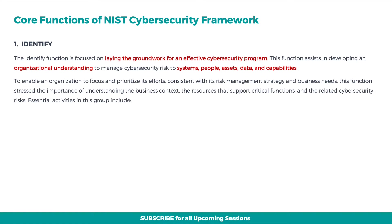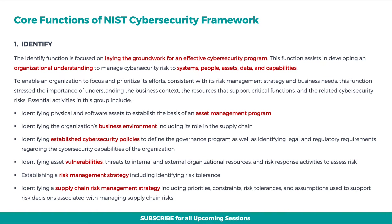Let's understand these core functions in detail. The first function is Identify. The identify function is focused on laying the groundwork for an effective cybersecurity program. This function assists in developing an organizational understanding to manage cybersecurity risk to systems, people, assets, data, and capabilities. To enable an organization to focus and prioritize its efforts, consistent with its risk management strategy and business needs, this function stresses the importance of understanding the business context, the resources that support critical functions, and the related cybersecurity risks.